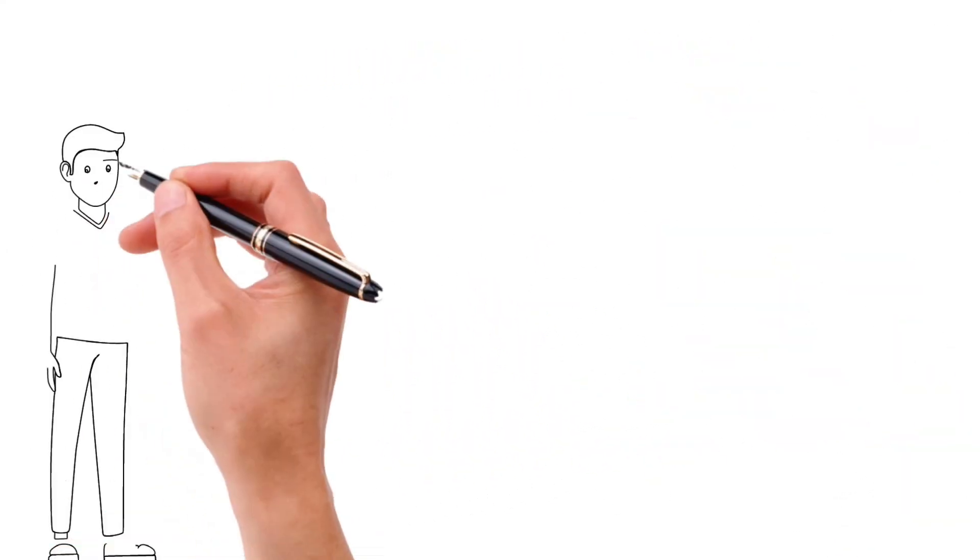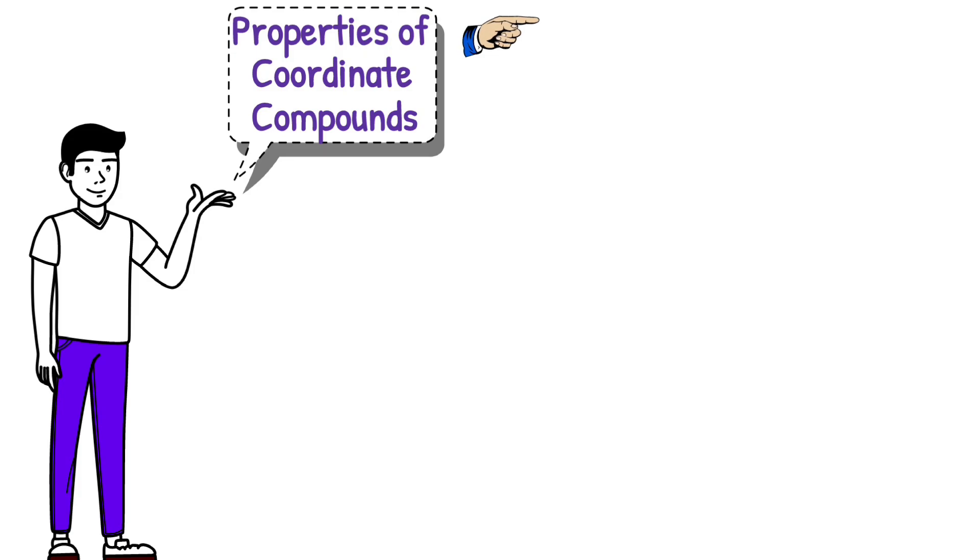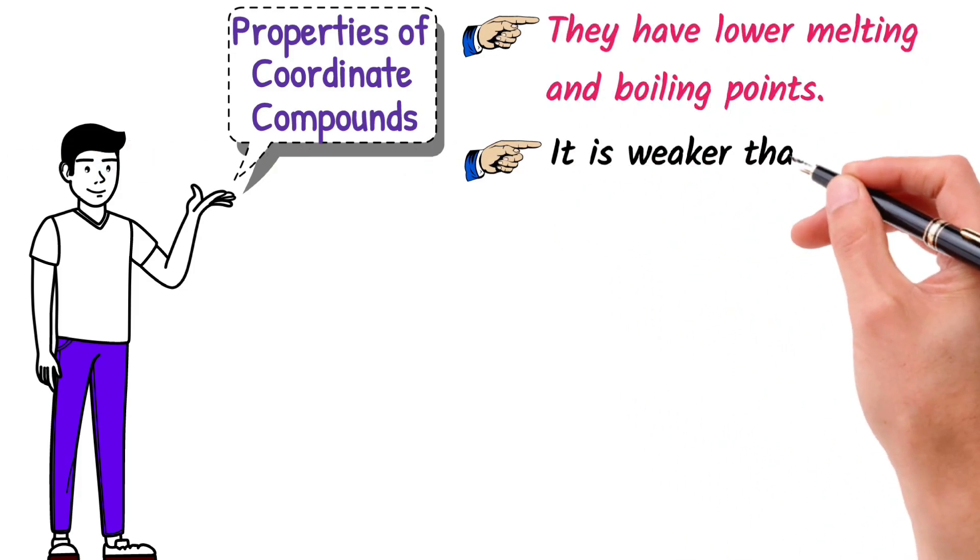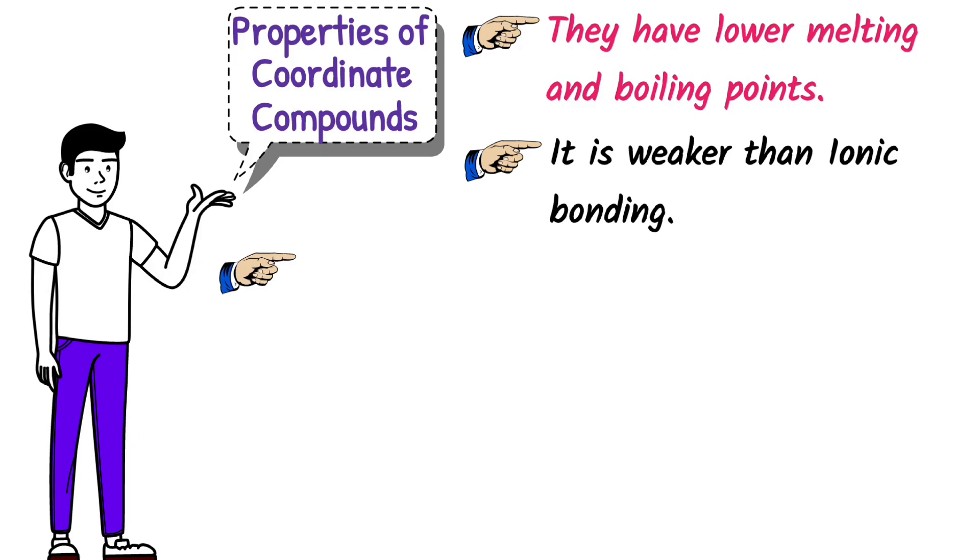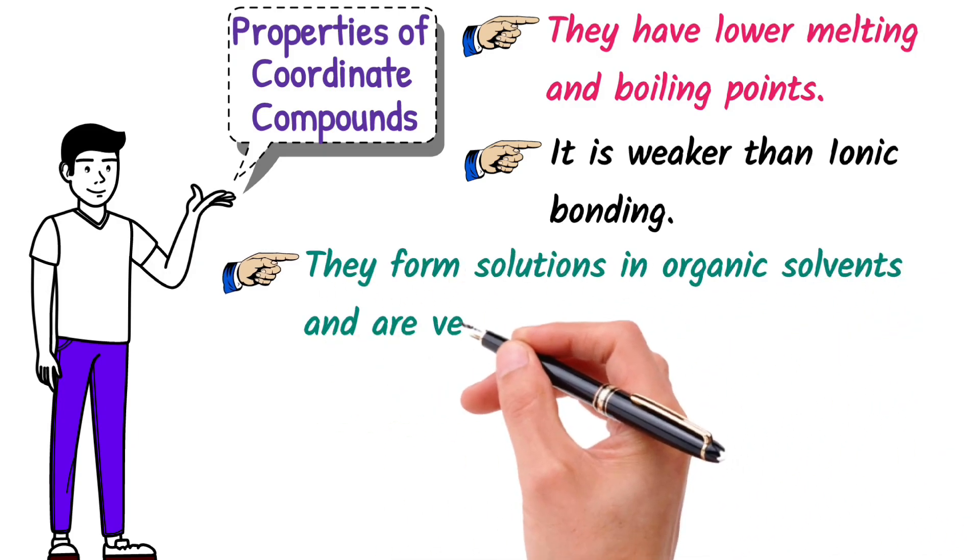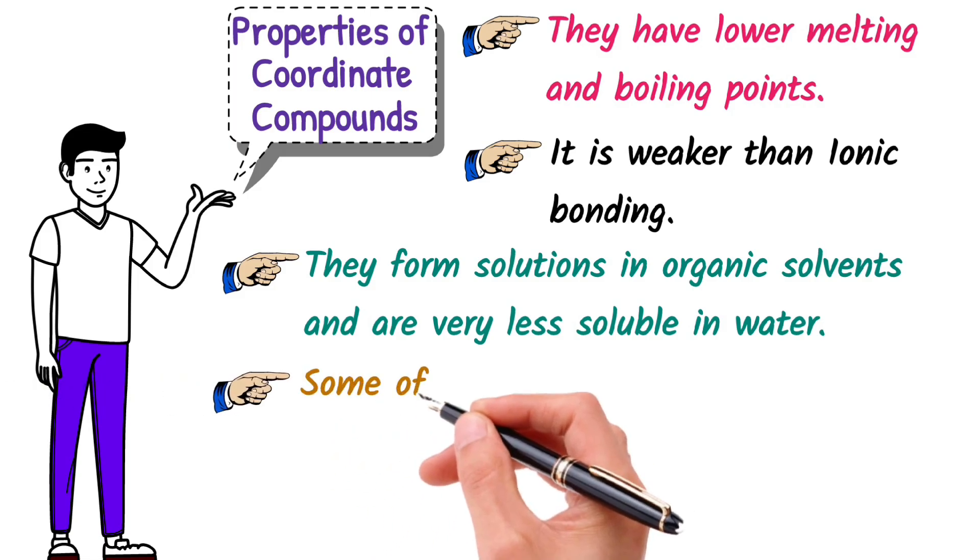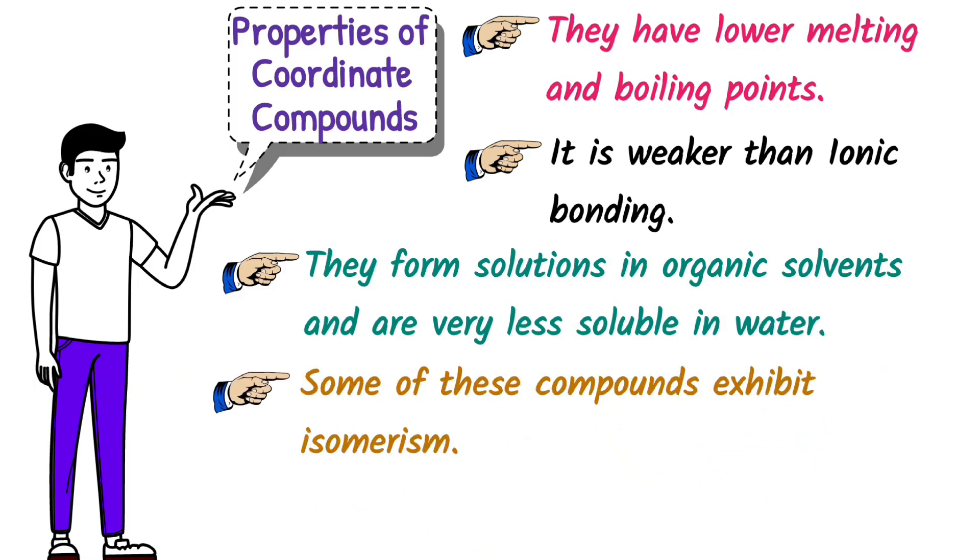Let me tell you some properties of coordinate covalent compounds. They have lower melting and boiling points than ionic compounds because it is weaker than ionic bonding. Due to their covalent nature, they form solutions in organic solvents and are very less soluble in water. Some of these compounds exhibit isomerism. Sharing of electrons takes place in a definite direction because it is a directional bond with a dipole.